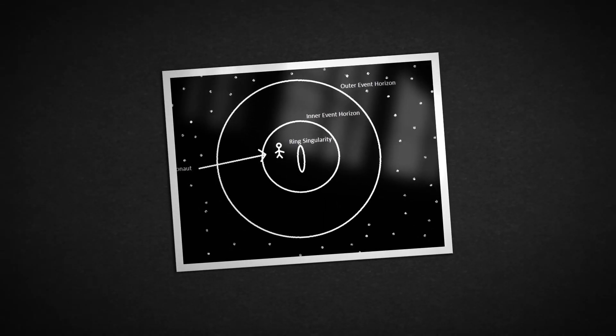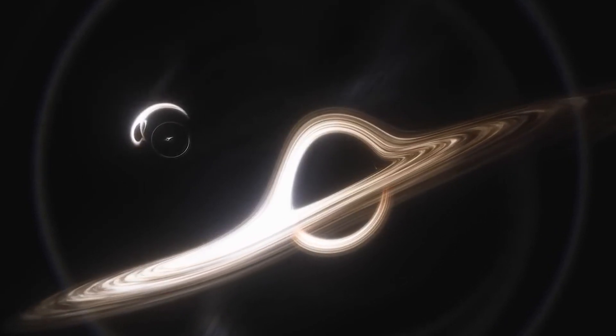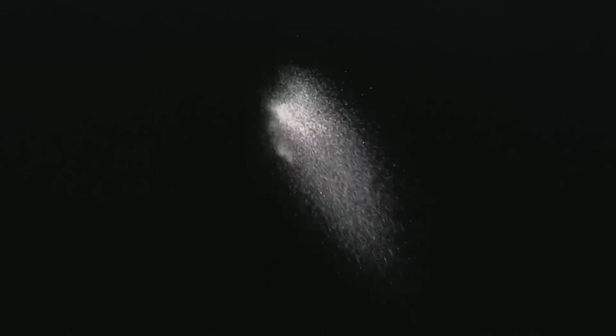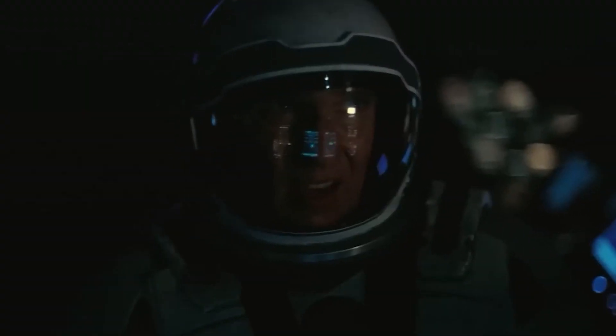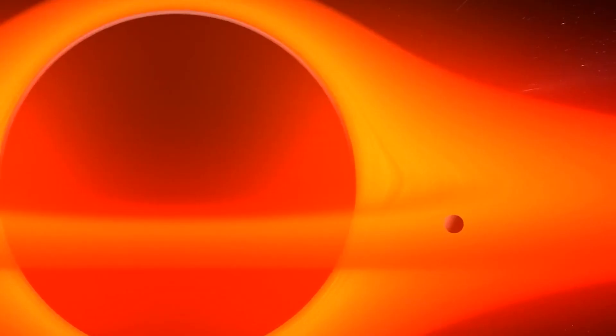Black holes have three layers: the outer and inner event horizon, and the singularity. Getting past the event horizon is incredibly difficult because it's the point of no return. Once inside, the laws of physics as we know them don't apply. Gravity is so strong that it warps space and time, compressing everything to an infinitesimal point, the singularity.